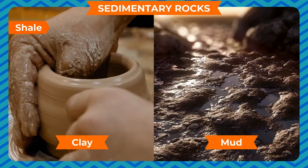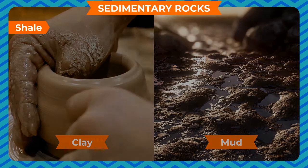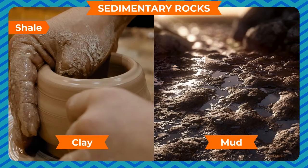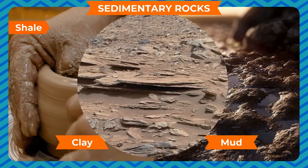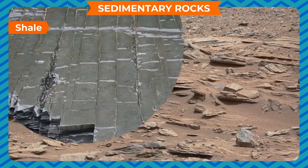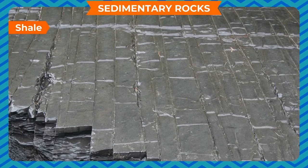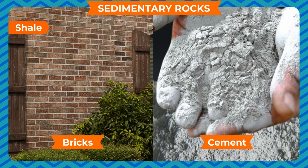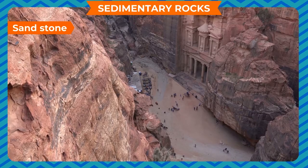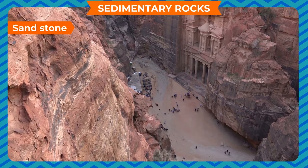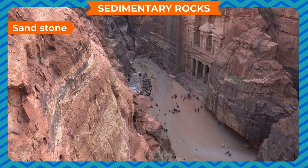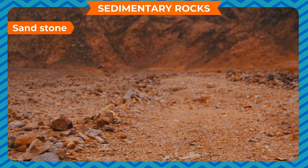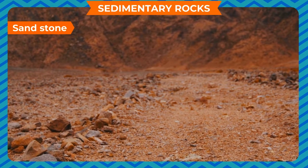Shale is a soft form of sedimentary rock. It is formed from clay and mud that settles at the bottom of an ocean, river, or lake. The clay and mud are compacted together by pressure to form shale. It is mainly used for making bricks, cement, and in surfacing roads.